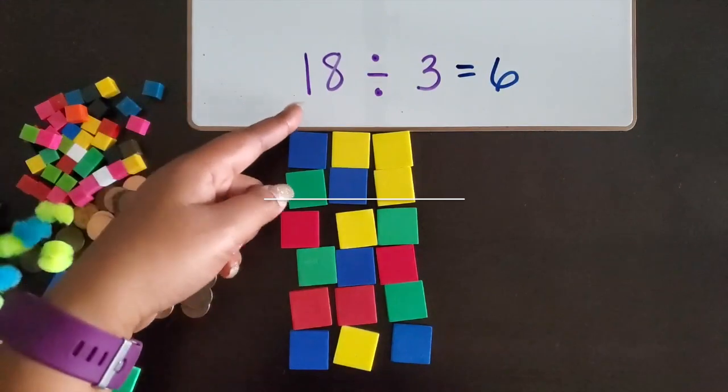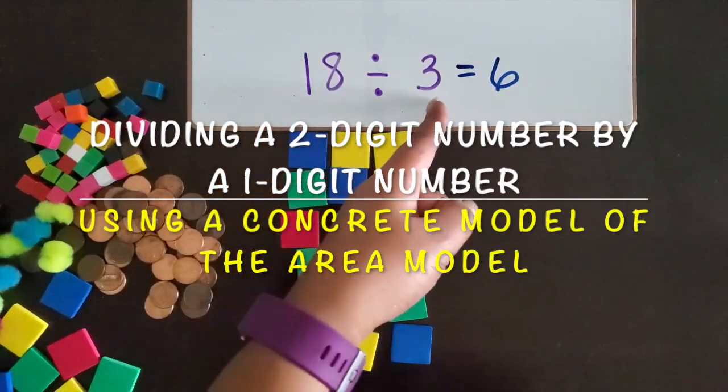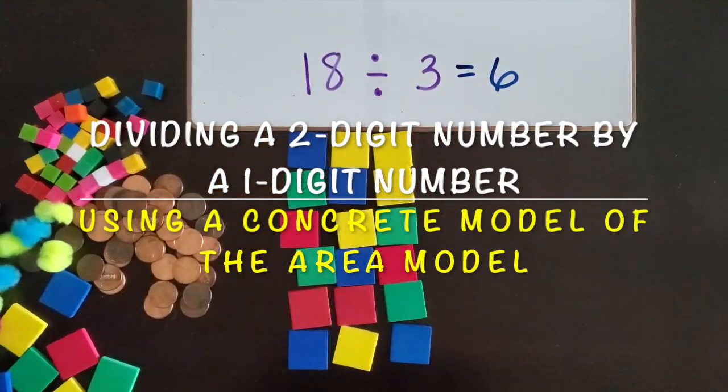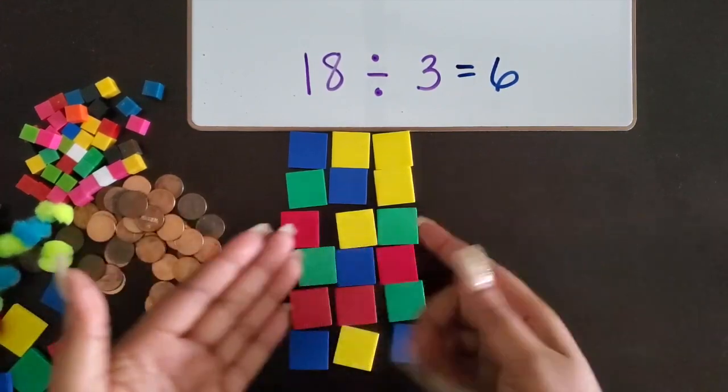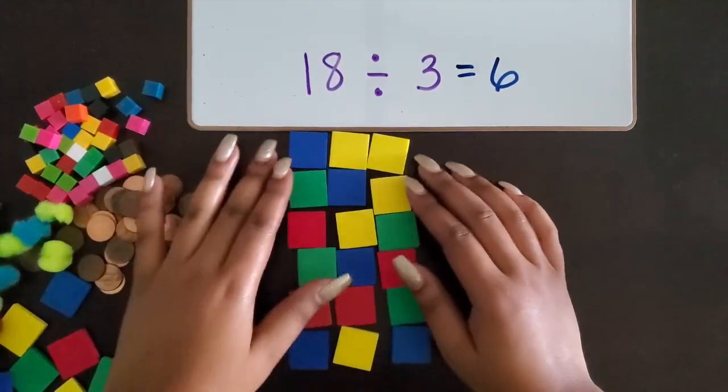We are going to take a two-digit number and divide it by a one-digit number representing the area model with square units. So like we said with the multiplication, we know when we're representing area, there can't be any gaps between our square units.